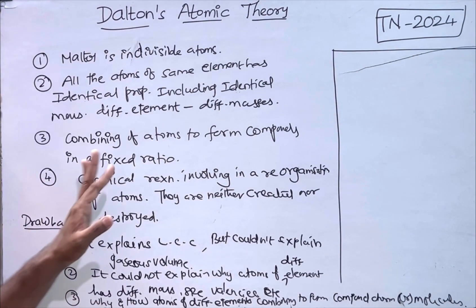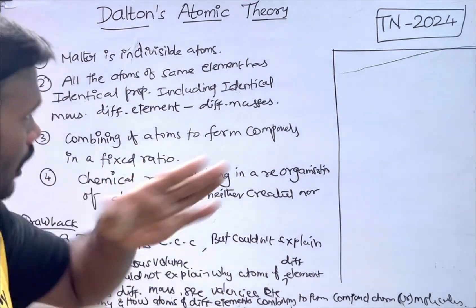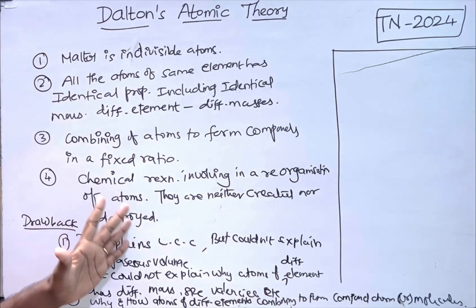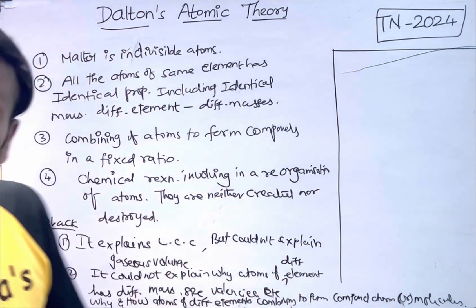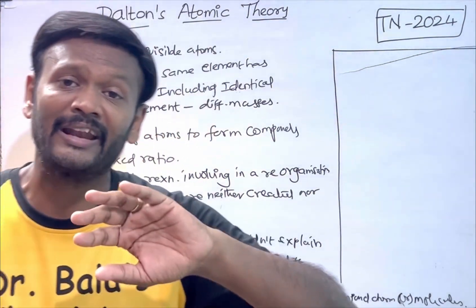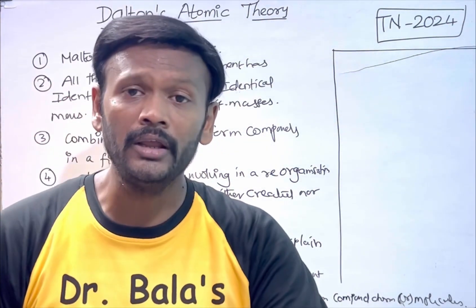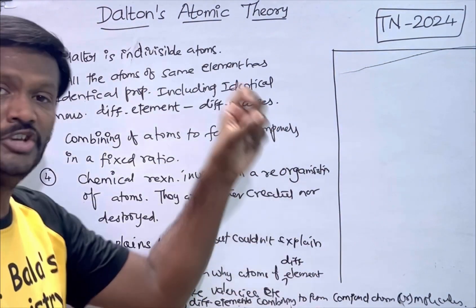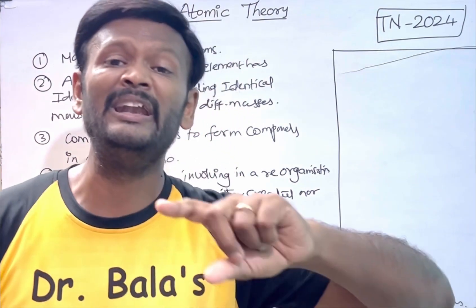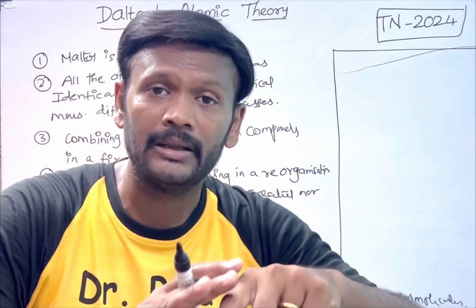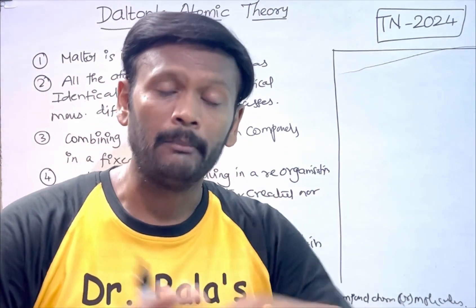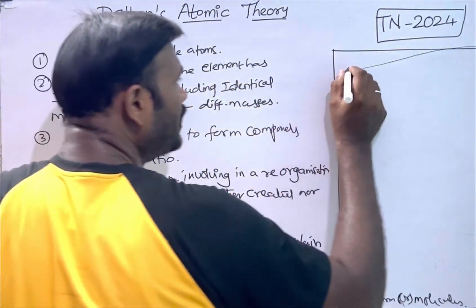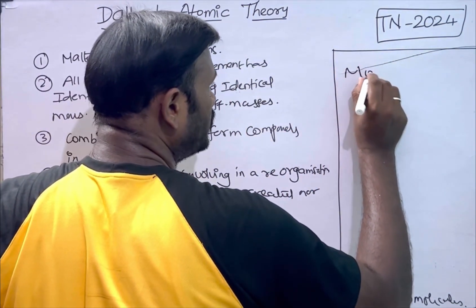In the 19th century, Dalton gave an atomic theory based on his ideas — a wonderful idea. But as a result, J.J. Thomson, Rutherford, and Niels Bohr combined to give a modified atomic theory.